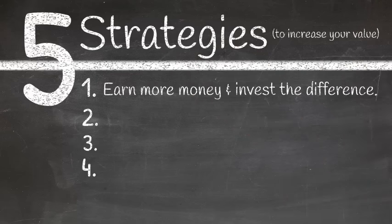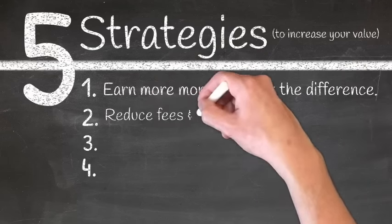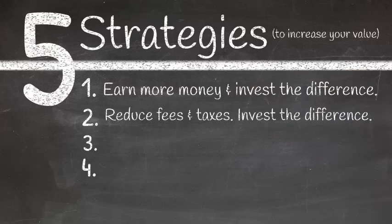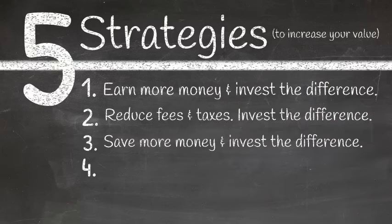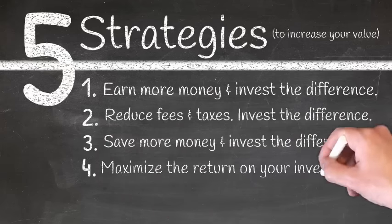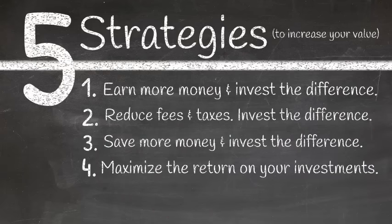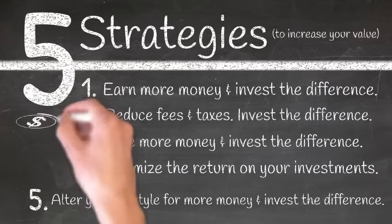The first one is to earn more money and invest the difference. The second is to reduce the amount of fees and taxes that you have and invest the difference. The third is to save more money and invest the difference. The fourth is to maximize the return on your investments. And the fifth strategy is to alter your lifestyle and invest the difference.